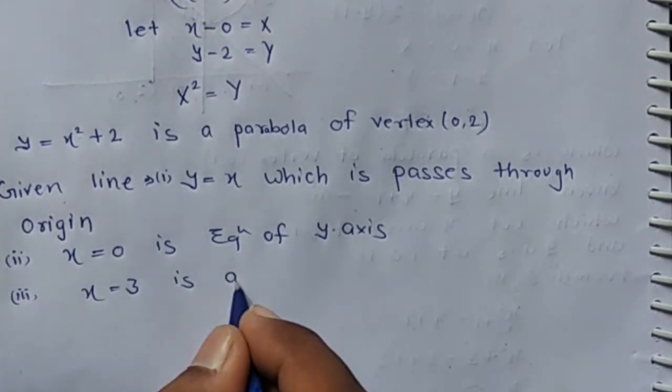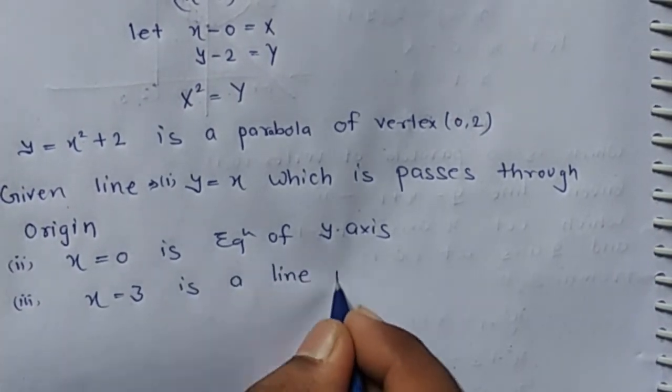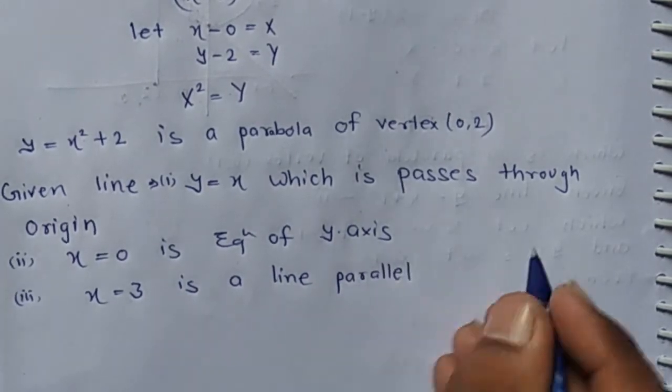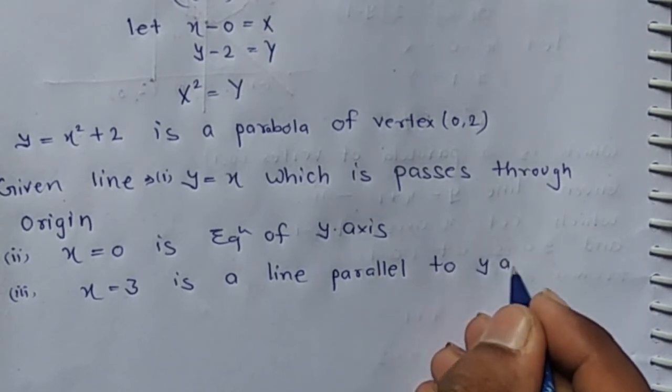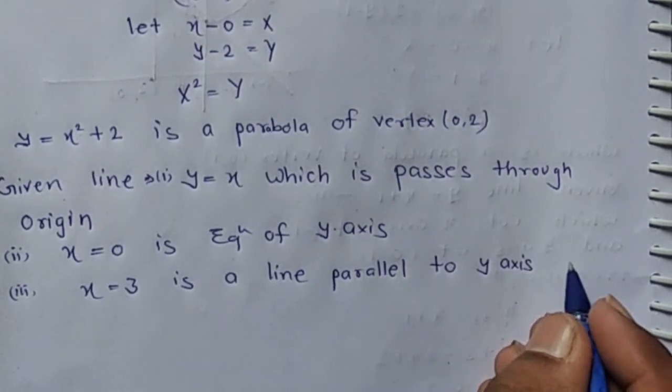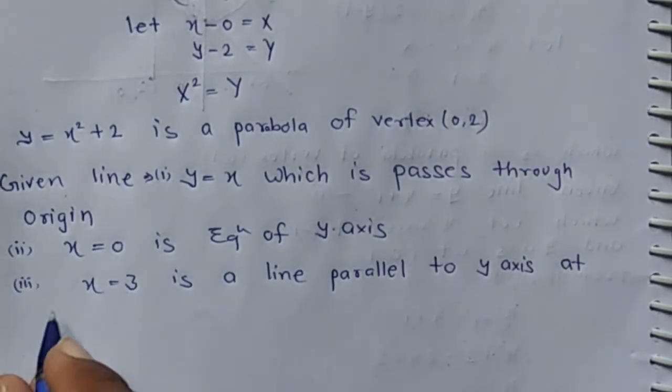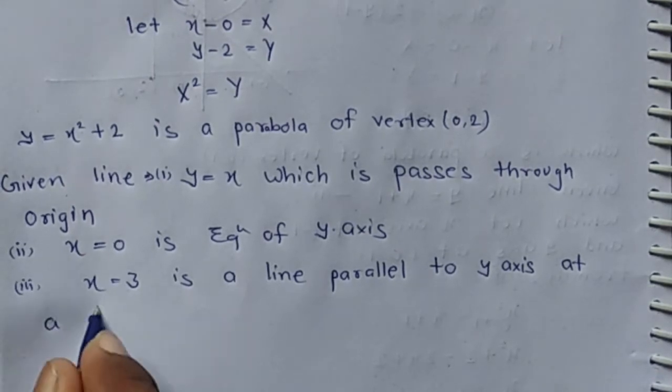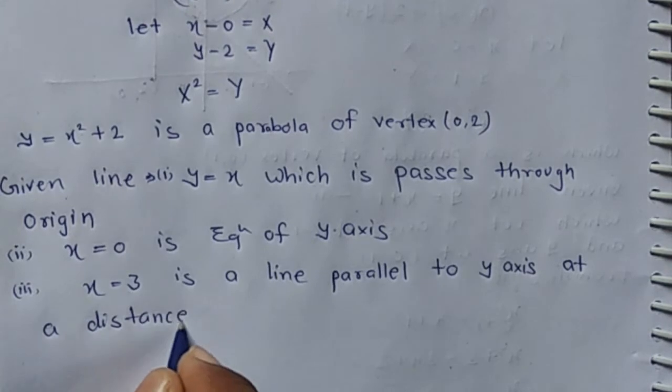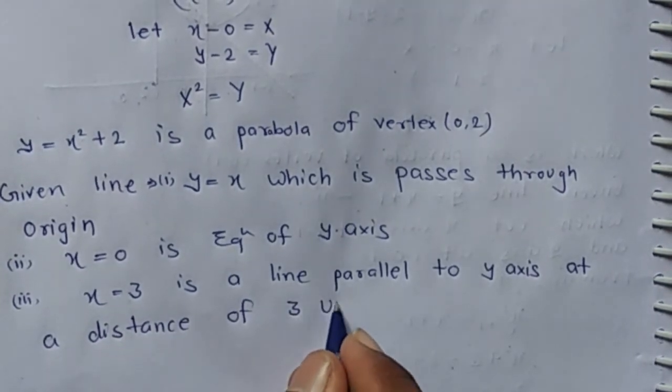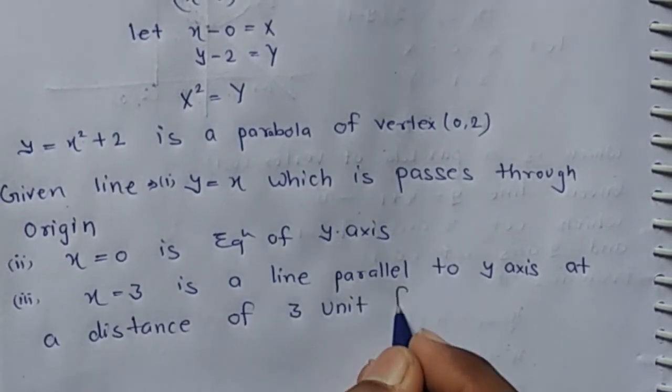x equals 3 is a line parallel to the y-axis at a distance of three units from it.